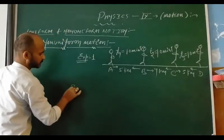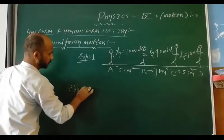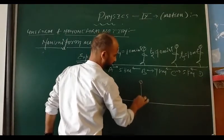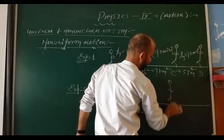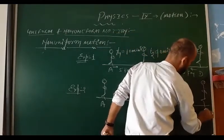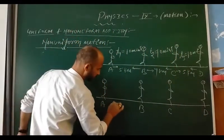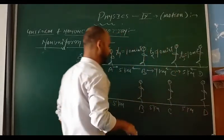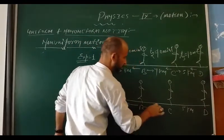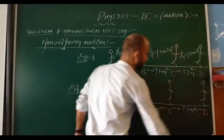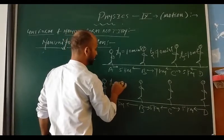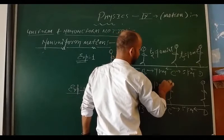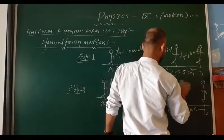Another example, number 2: Point A, point B, point C. Suppose distance A to B is 5 km, again 5 km, again 5 km — distance is the same. But time T1 is 15 minutes, T2 is 10 minutes, and T3 is 20 minutes — the time intervals are different.